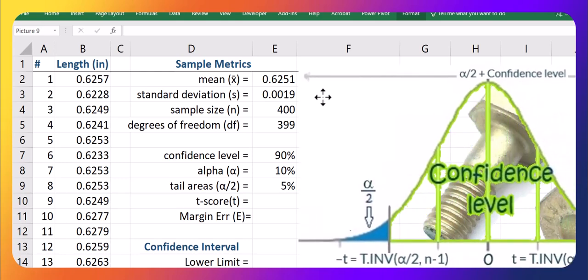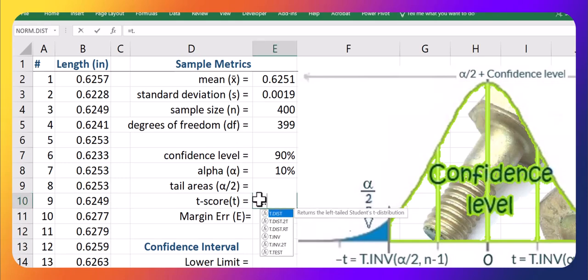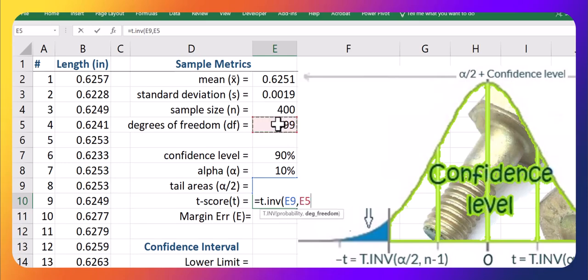So two options. For a t-score, we could do a t.inv and just put in the 5%, which is in E9 here. So it's a bit hidden. And then put in the degrees of freedom. And that would give us a negative t-score. Negative 1.6487. We could also have actually put in that 5% plus the 90. So the 5% plus the 90. That would give us the positive t-score. That's another option. It's a bit more work though.